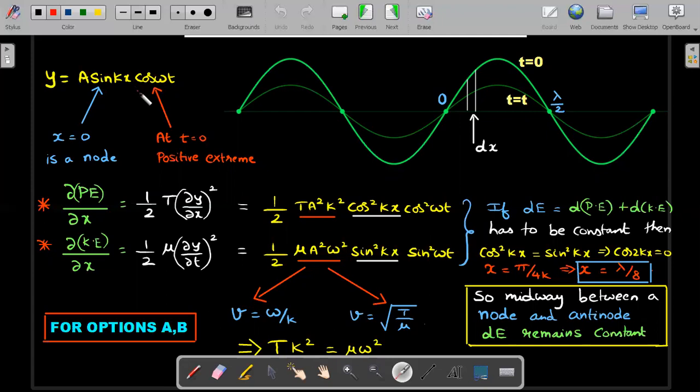You may question: why sin and cos and not cos-cos or sin-sin? In the question, x equals zero is a node. Whenever x equals zero is a node, you can directly write sin(kx), which means for all values of time, if you substitute x equals zero you should get y equals zero.